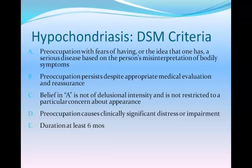The preoccupation causes clinically significant distress or impairment and lasts a duration of at least six months. This is a fairly long duration compared to other disorders that say at least one month. The reasoning is that most of us will have concerns about being sick at some point, and with enough medical reassurance we can calm ourselves. If symptoms last less than six months and resolve with reassurance, it probably isn't hypochondriasis. The six-month bar helps distinguish the disorder from normal health anxiety.